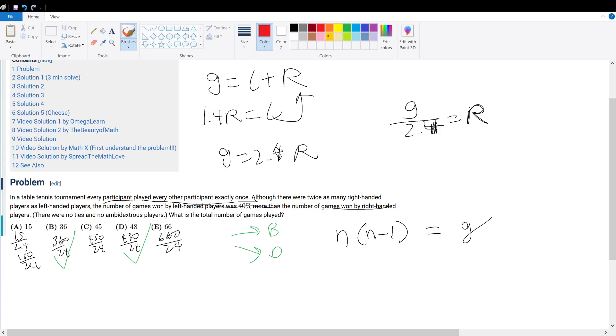For example, let's say there's only two players, A and B. Based on our logic, A plays B, and then B plays A. So we would have double counted here. In order to get rid of this double counting, we just simply divide it by 2.